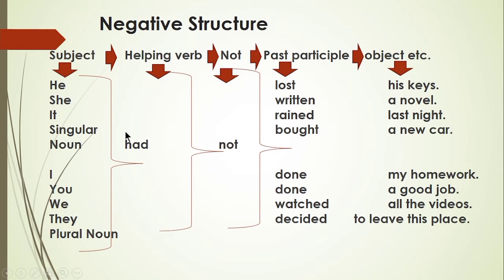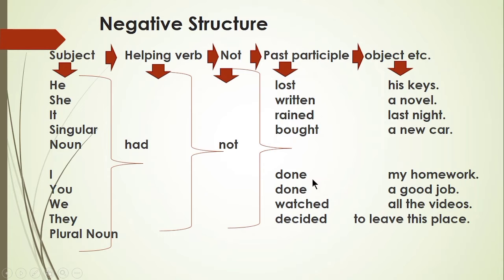Negative structure: in the negative we only introduce 'not' after 'had.' For example: 'She had not lost her keys.' 'He had not written a novel.' 'I had not done my homework.' 'You had not done a good job,' and so on.